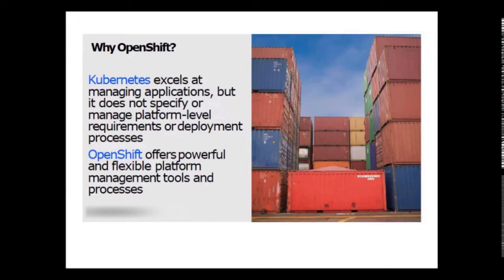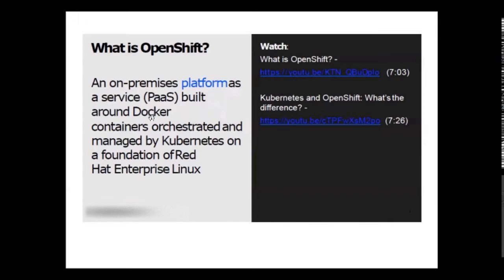Kubernetes by default will help you to manage your applications. OpenShift provides platform management tools that help you manage all the necessary platform-level requirements and deployment processes. It is an on-premise platform as a service built around Docker containers, orchestrated and managed by Kubernetes on a foundation of Red Hat Enterprise Linux.